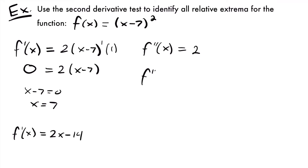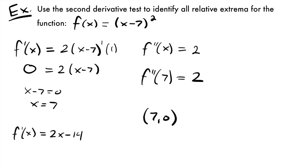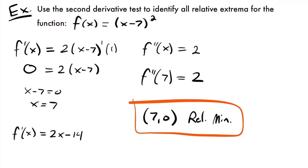If we plug 7 into our second derivative, we get 2 back — no matter what value you plug in, the second derivative is always 2. Since 2 is positive, that means we have a relative minimum at x = 7. To find the full coordinate point, we plug 7 into the original function: (7-7)² = 0² = 0. So our relative minimum is at the point (7, 0). That is the one relative extrema for this function using the second derivative test.